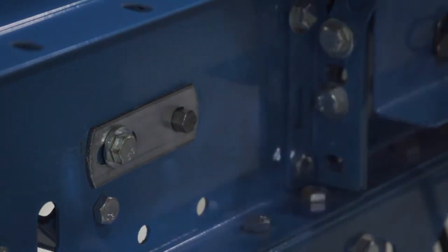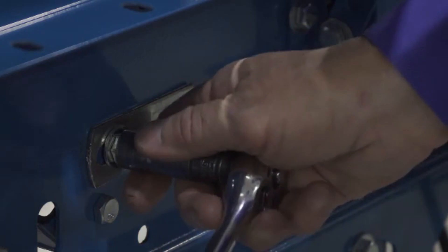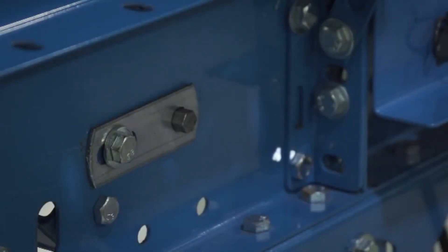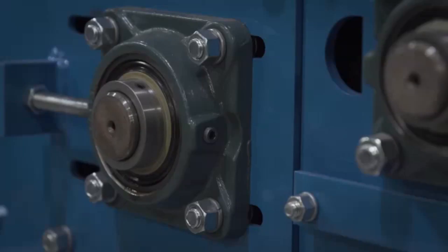Please note that minor belt tracking adjustments should be made one eighth of an inch at a time. Give the belt adequate time to react to the adjustments. It may take several complete revolutions around the conveyor for the belt to begin tracking properly on a long, slow conveyor line.